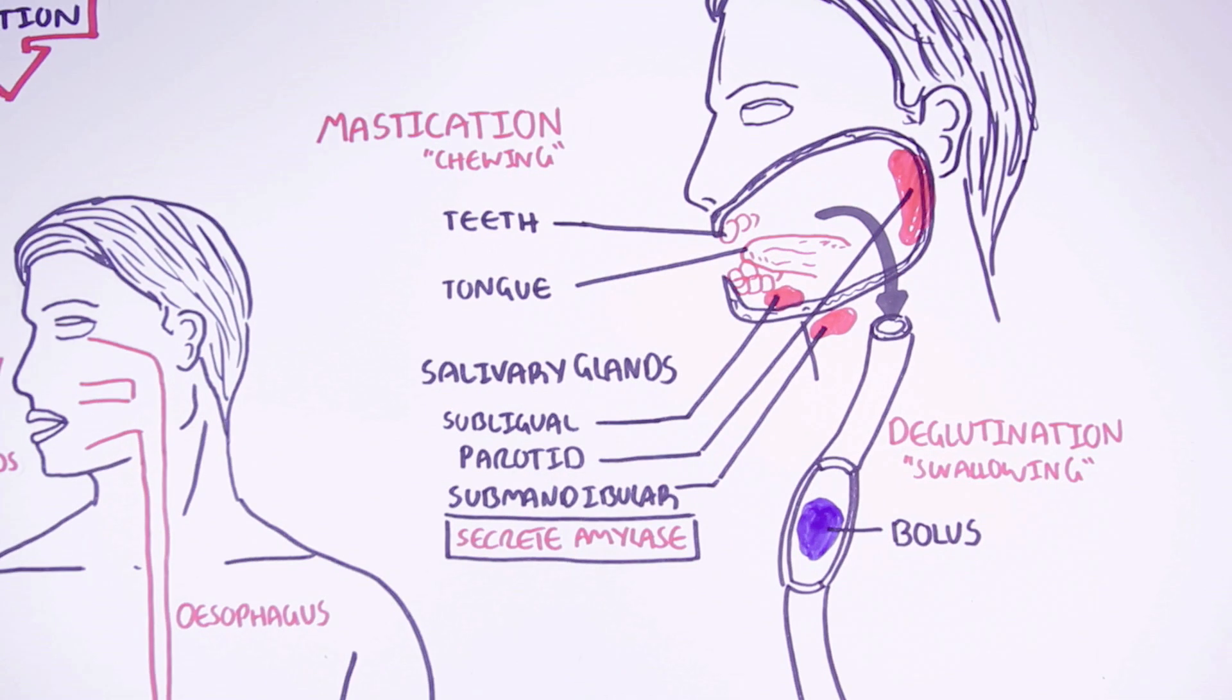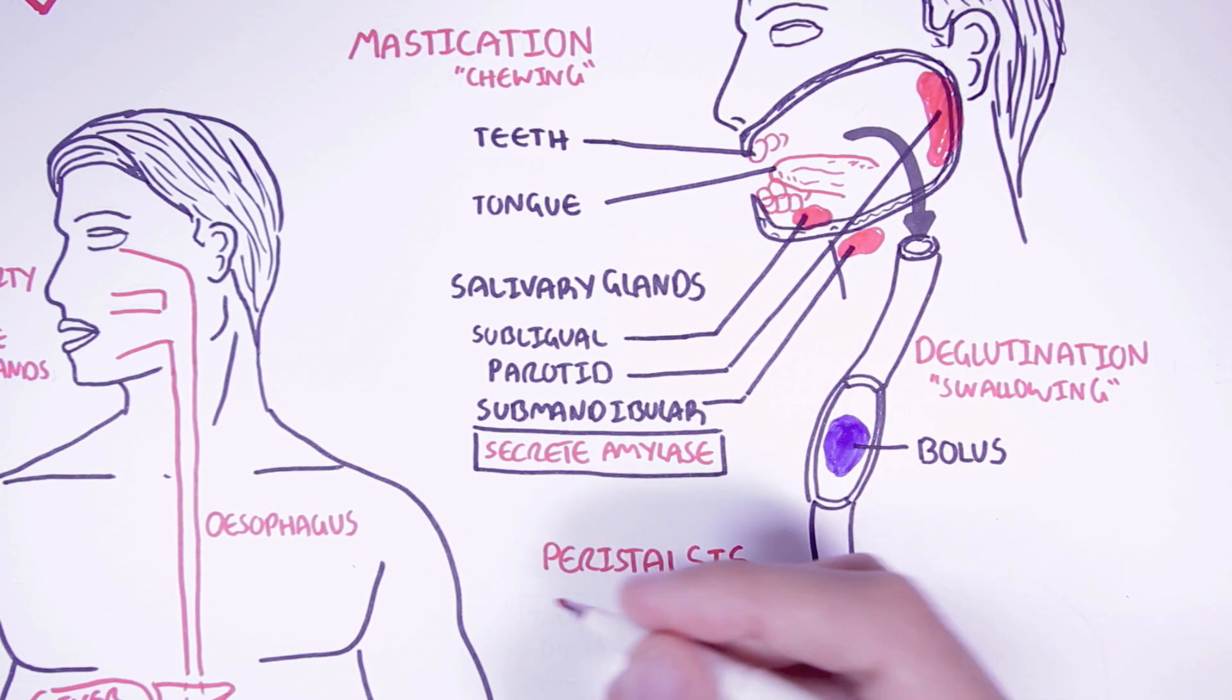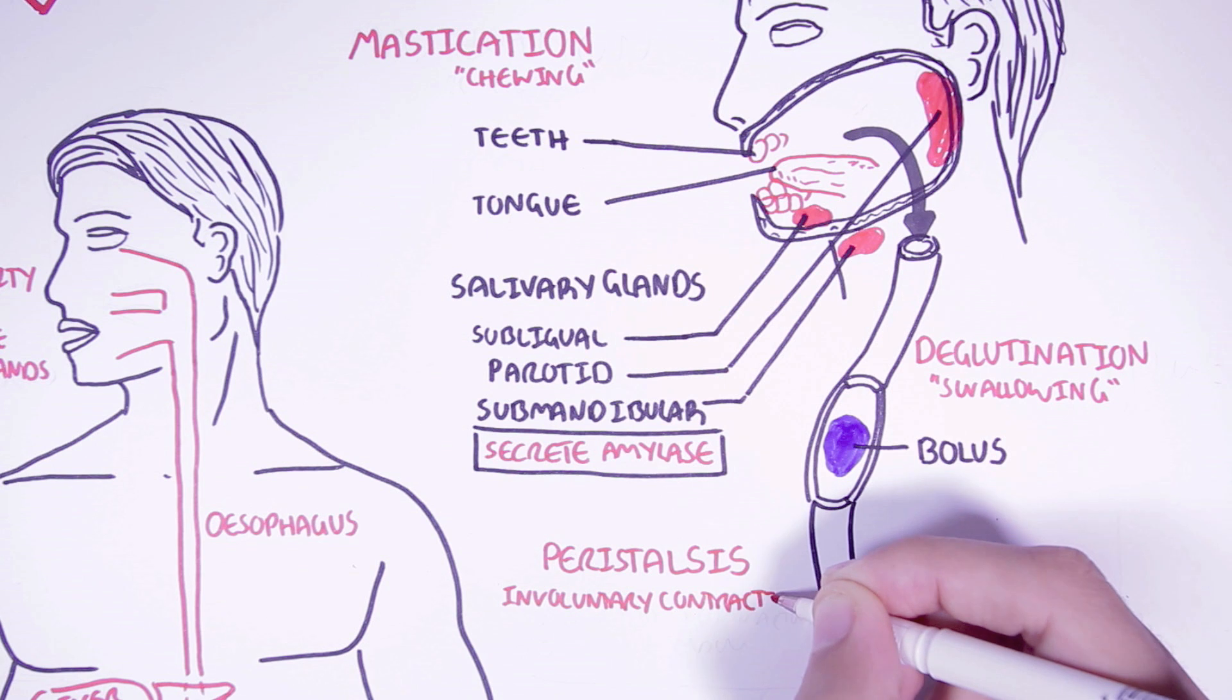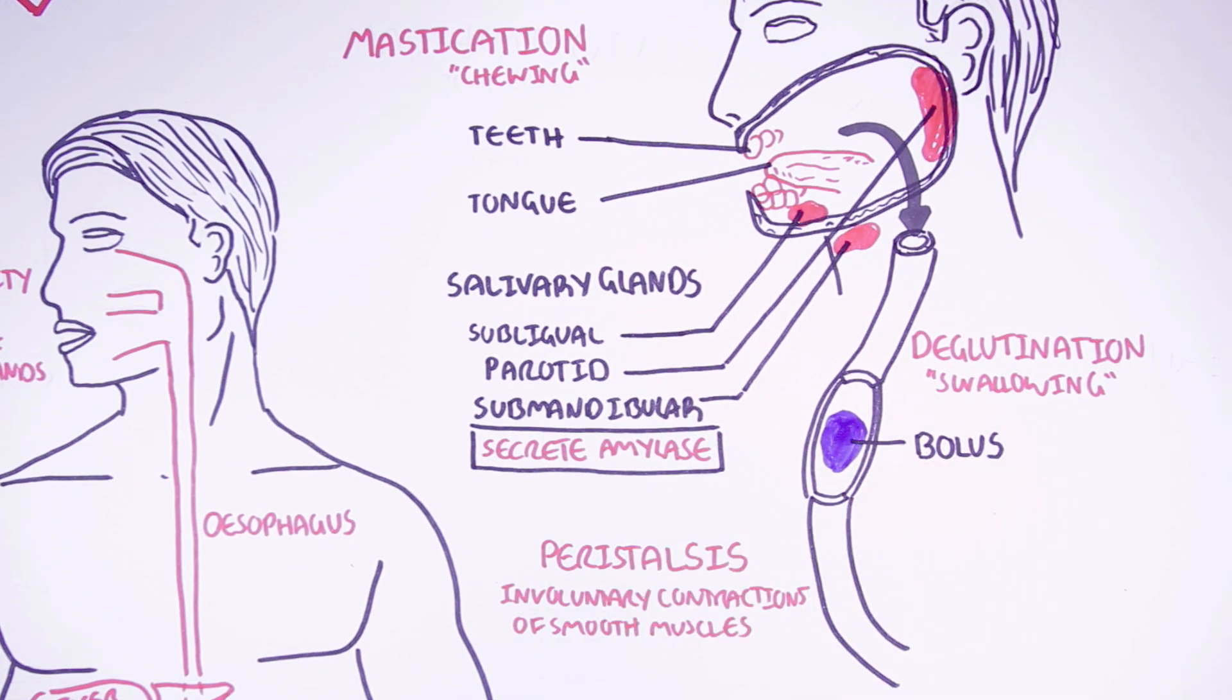The bolus will travel through the esophagus thanks to peristalsis. Now peristalsis is the involuntary contraction of the smooth muscles that line the digestive tract. Peristalsis allows the movement of food through the digestive tract essentially.